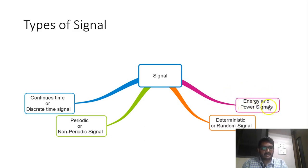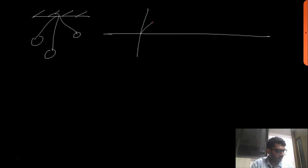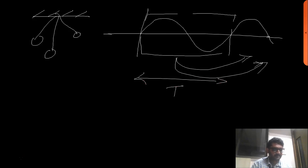We are not basically focused on energy and power signals. We will see continuous time and discrete time signals in detail. Before that, we will go through what is a periodic signal and what is a non-periodic signal. We had seen last time the example of a pendulum, where we got a sine wave and this part was repeating again and again. A signal which repeats itself after a time period T is known as a periodic signal.